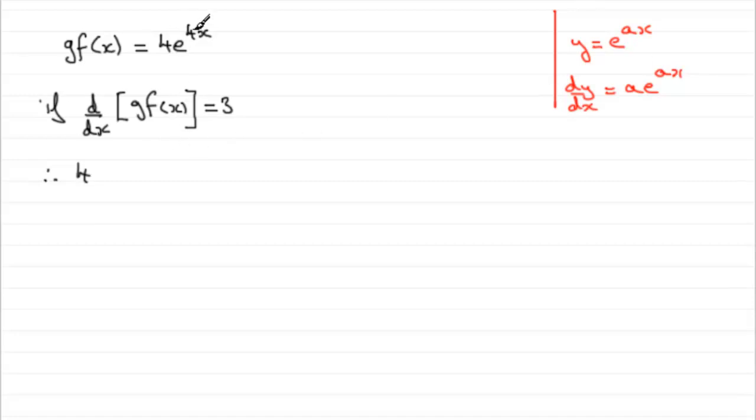So when it comes over to here then, when we differentiate e to the 4x, we're going to get 4e to the 4x. So this is multiplied then by 4e to the 4x, and this is equal to 3.